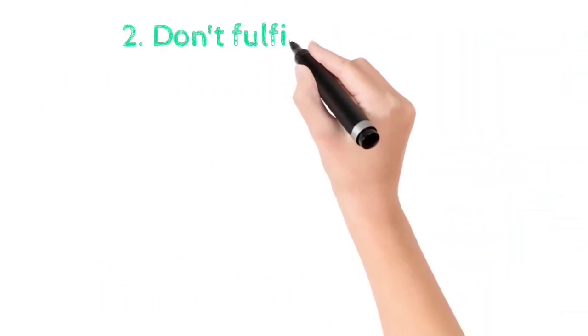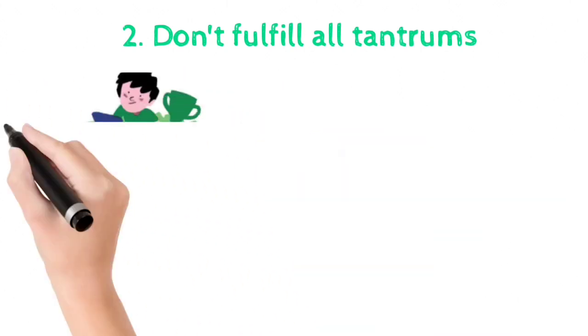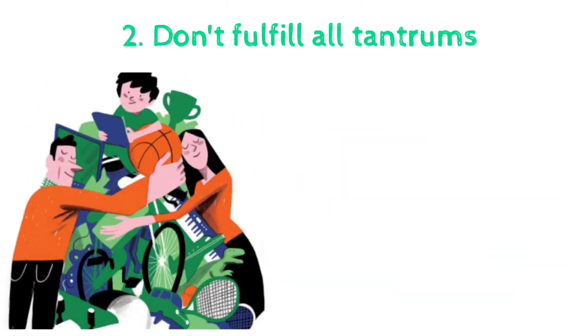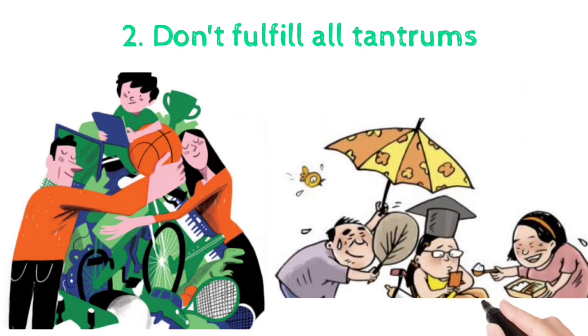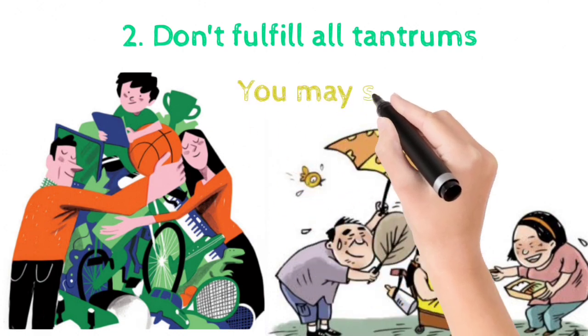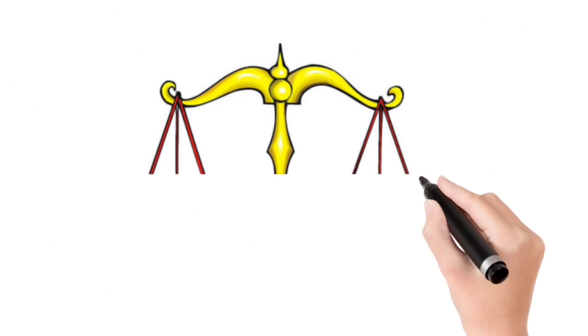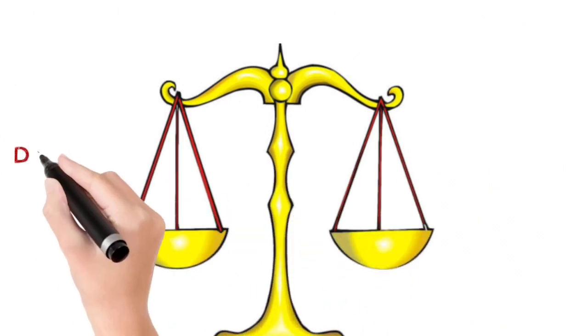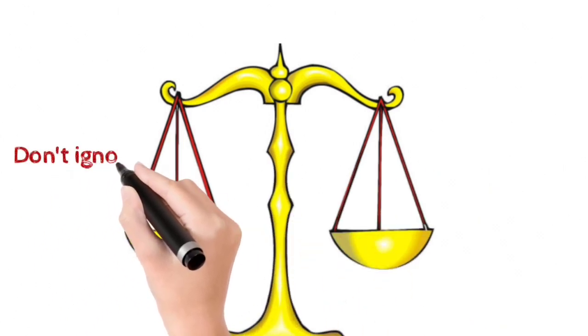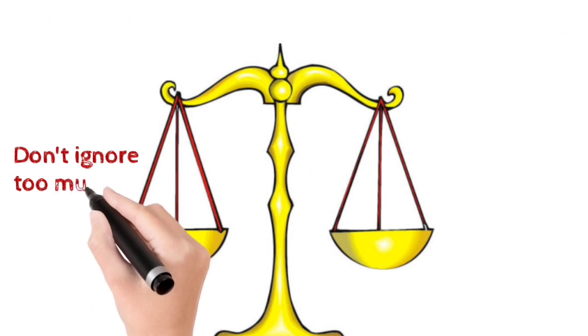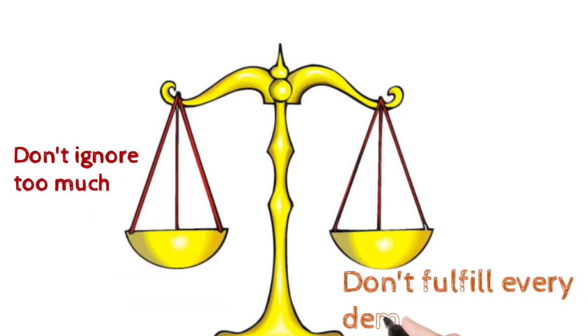Second is don't entertain all the tantrums. If you do that, you may spoil that person. If at any point of time you are unable to fulfill their demands, they will become aggressive immediately. So try to create balance. Neither ignore every time nor listen to all their tantrums.